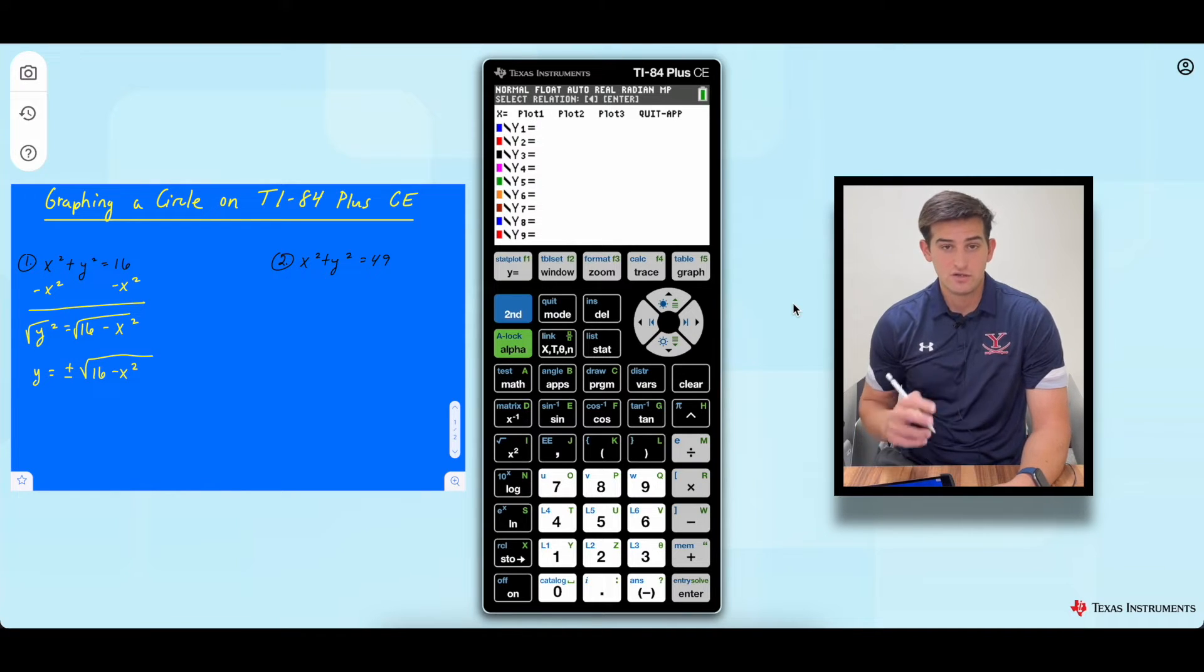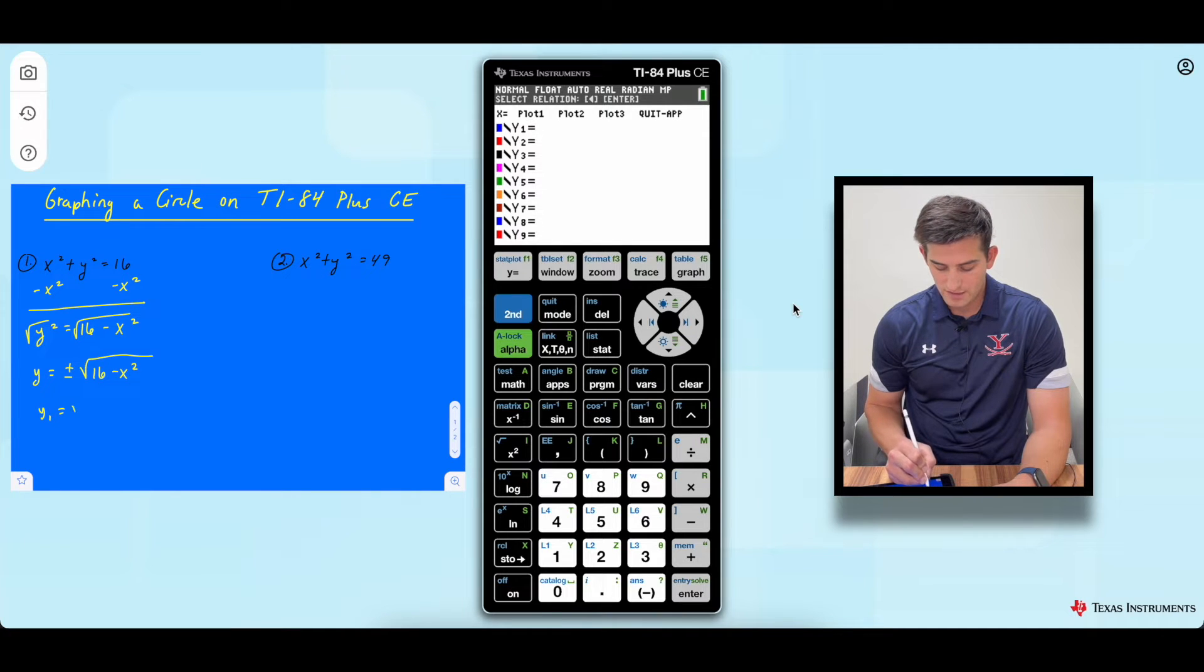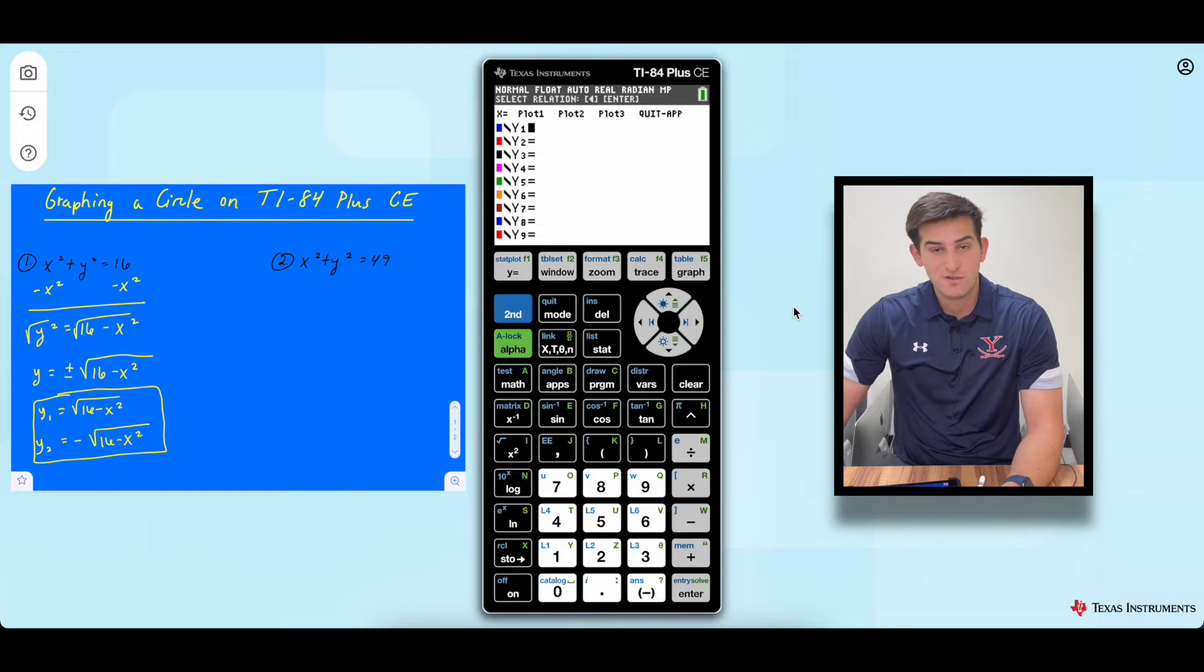So in our calculator, we're going to graph this as two separate functions. For y1, we're going to graph positive square root of 16 minus x squared. And for y2, we're going to graph negative square root of 16 minus x squared. So let's graph these two equations in our calculator and let's see if we can find a circle or get a circle.